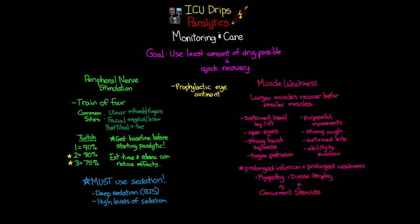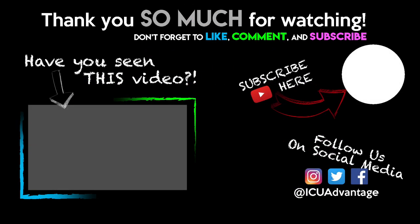Second, an interesting point — these medications don't affect cardiac muscle, which is why we can safely paralyze patients. Additionally, the pupillary muscles are generally not affected either, so you can still check for pupillary reaction in your paralyzed patients. That wraps up this lesson on paralytics — if you found it useful, please like and subscribe, and look out for the next lesson in this series.